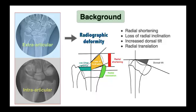Malunion after distal radius fractures can be extra-articular, intra-articular, or both. Extra-articular malunions are more common, especially in the dorsal direction. These malunions often present as radiographic deformity with loss of radial length, inclination, reversed volar tilt, and radial translation of the distal segment. These patients often tend to be asymptomatic, especially if they are older and less demanding.